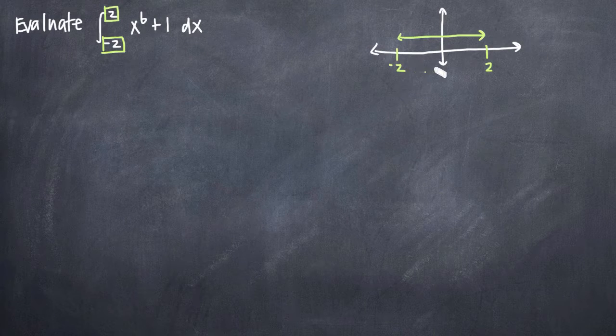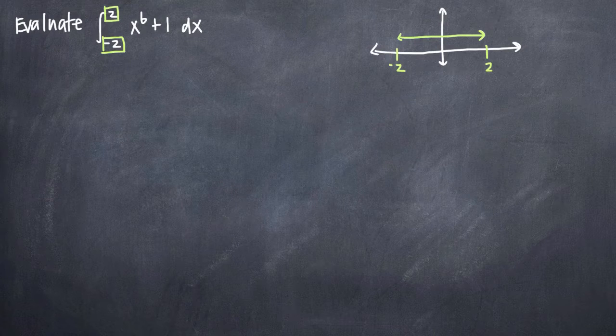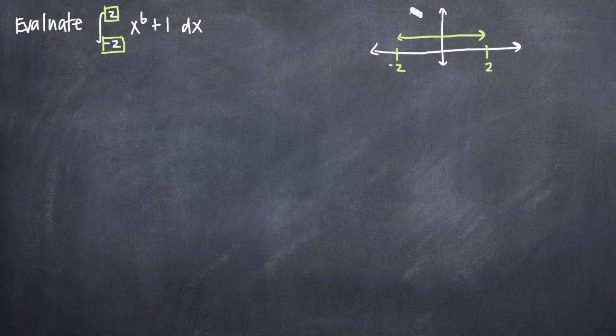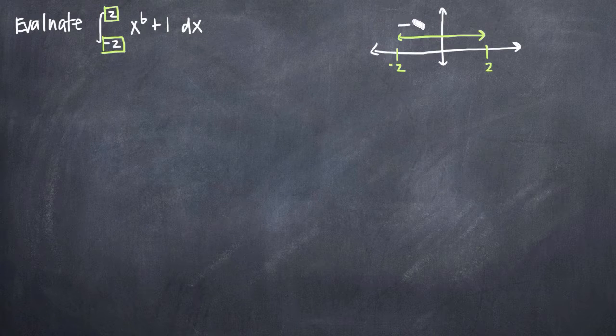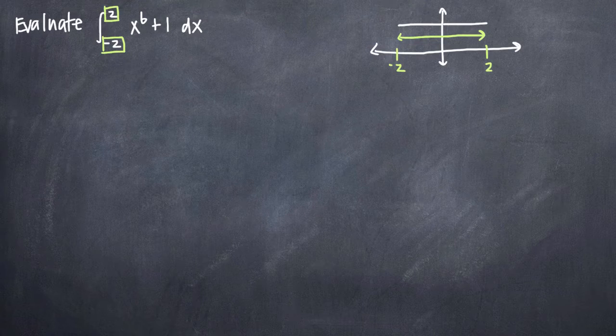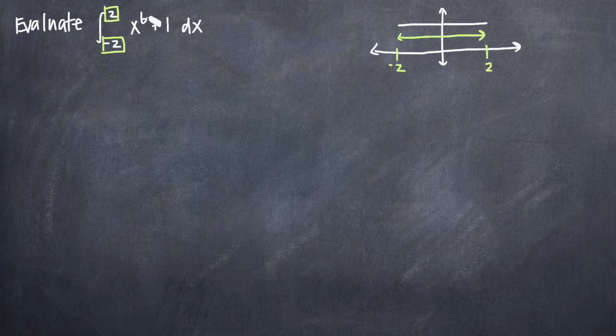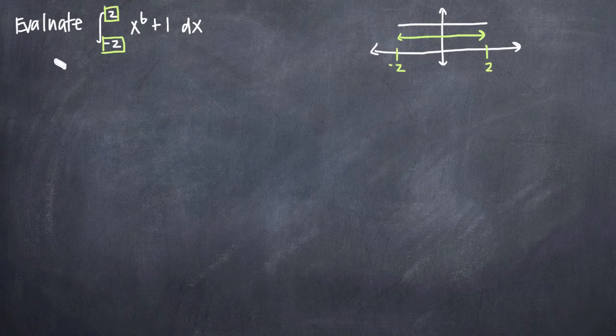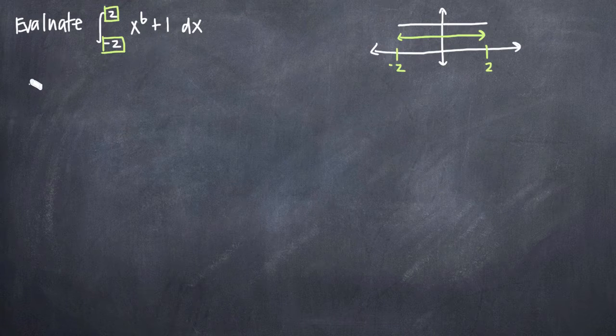The next thing that we want to look for is to test whether or not our function actually is even. If our function is in fact even and we're being asked to evaluate the same distance to the left of the y-axis as we are to the right of the y-axis, then we can take advantage of a specific kind of simplification when it comes to evaluating the definite integrals of even functions. So we want to test to see whether or not our function is even.